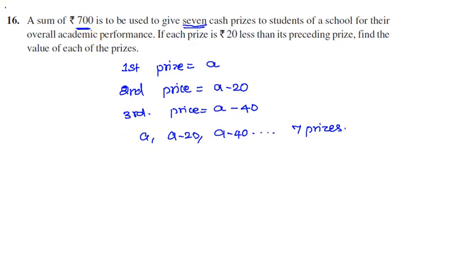We have to equal 700 because we have to split 7 prizes totaling 700. The difference is the same: 20, 20, 20. So first term is 'a'. Common difference is second term minus first term: a-20 minus a, so 'a' cancels, leaving minus 20.